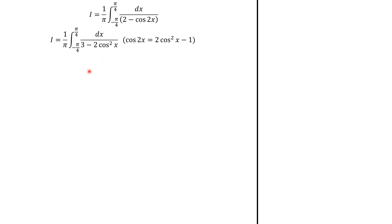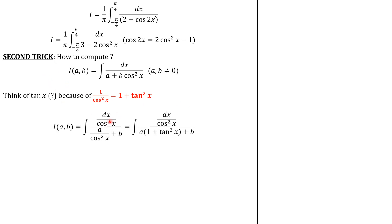That's where we come to our second trick because generally speaking, we know how to compute the antiderivative of 1 over a plus b cosine square of x. The key comes from this relationship because 1 over cosine square of x equals 1 plus tangent square of x. We write I as follows, dividing both numerator and denominator by cosine square of x. Next, we replace 1 over cosine square of x by this expression.